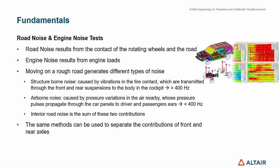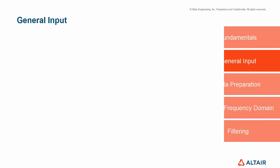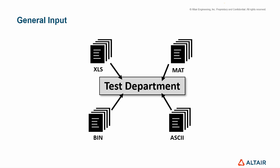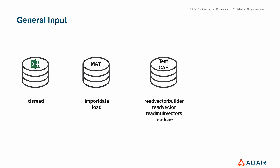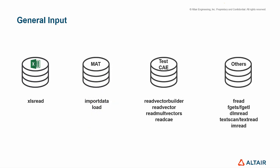The same method can be used to separate the contributions of front and rear axles, and the decomposition of contributions is done through a transfer function between the acoustic pressure at a certain observation point and the applied force. Regarding general input in Compose, there are some main categories of files commonly used in NVH experimental analysis: Excel-compatible files such as CSV or XLSX, MAT files which store variables of all data types, test and CAE files leveraging HyperGraph readers to support files from various acquisition systems and different solvers, and other formats like binary, delimited files, text files, and images.